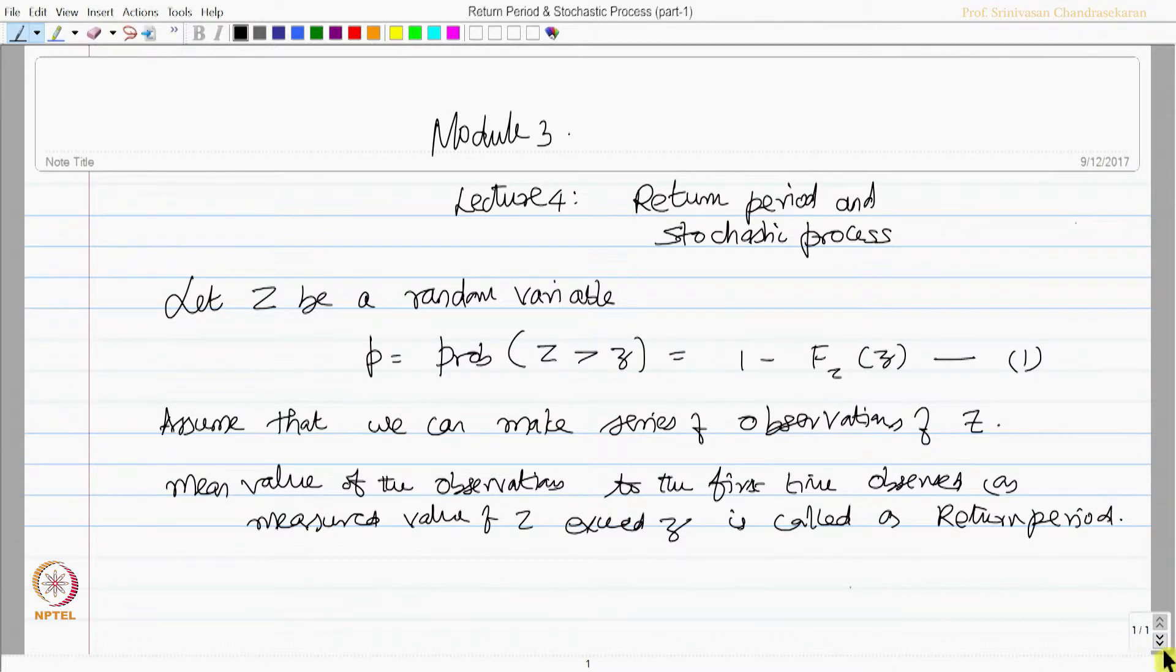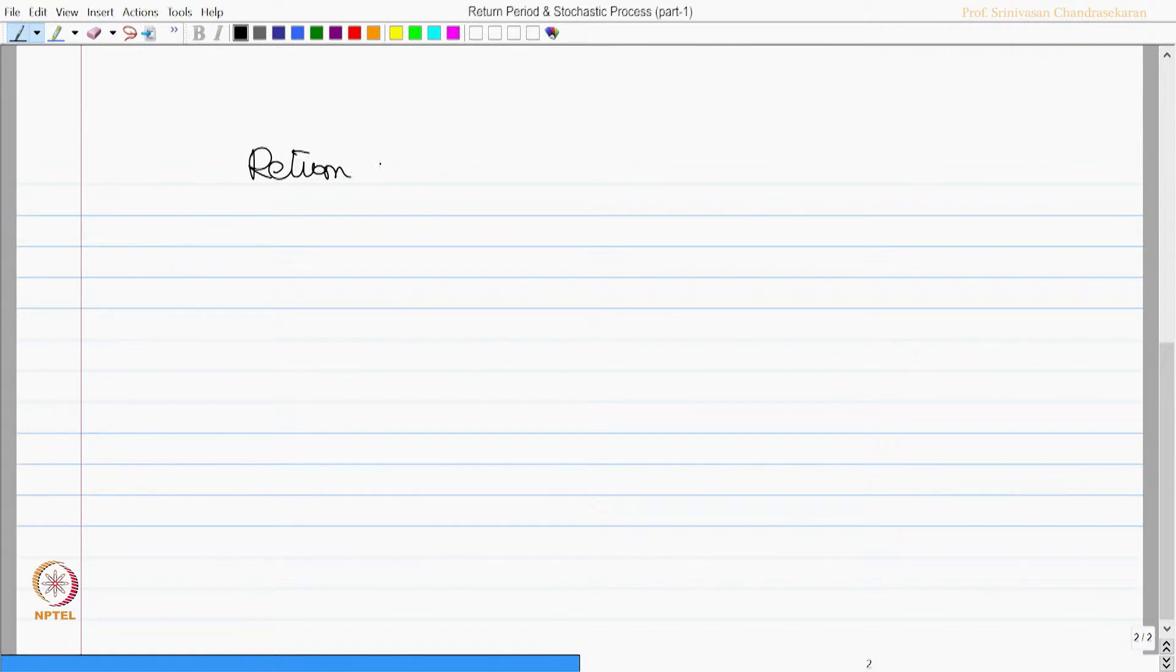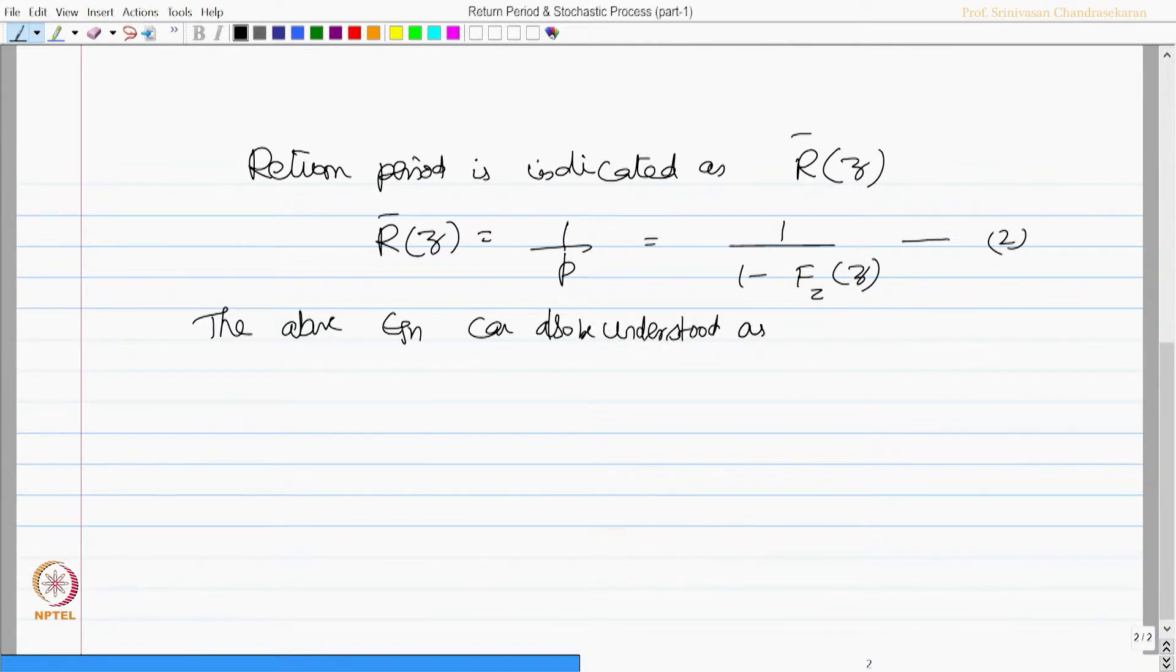Let us elaborate this more in detail. Return period is indicated as r bar of small z which is given by 1 by probability which is 1 by 1 minus f_z of z, equation number 2. The above equation can also be understood as an average of 1 over p trials of an event. This should be conducted before an event of probability P occurs.